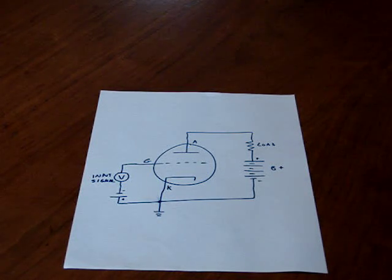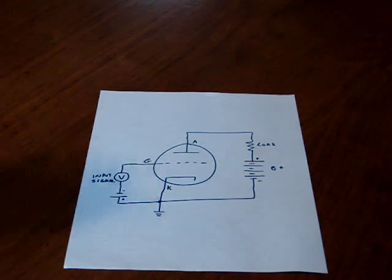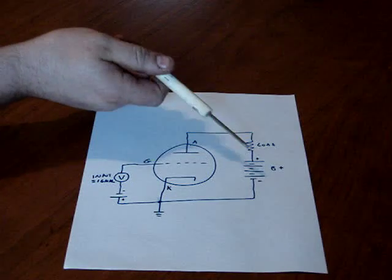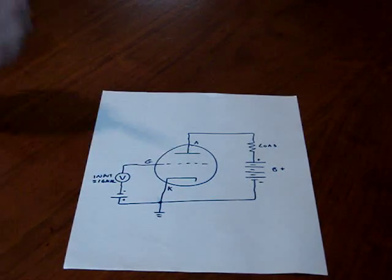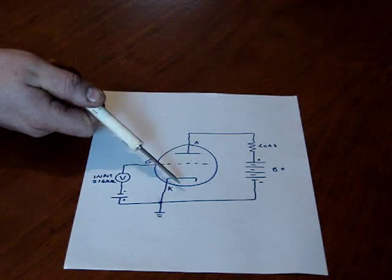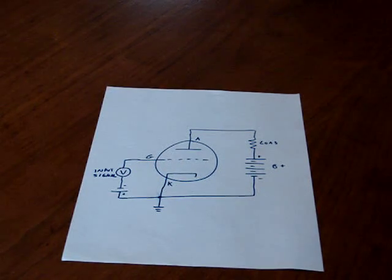But when you start getting into more modern equipment that plugs in the wall, you would need a rectifier for the high voltage. You would need a rectifier for this voltage. And if it was a directly heated cathode, you would need a rectifier for the filament. So now you got to have three extra tubes and they wanted to try to get away from that. So the way they get away from it, I will show you in the next drawing.